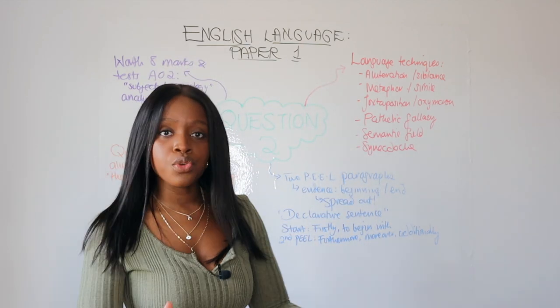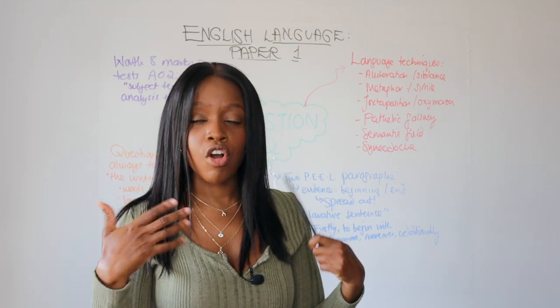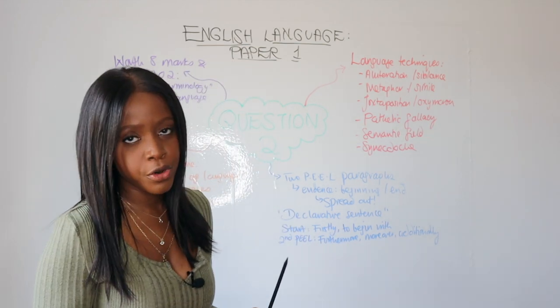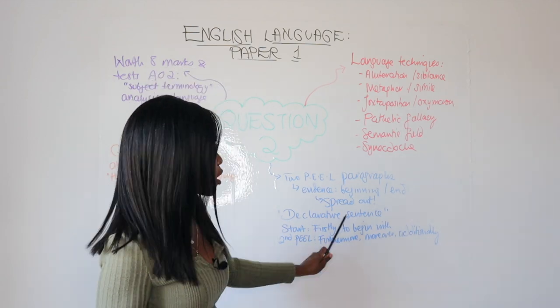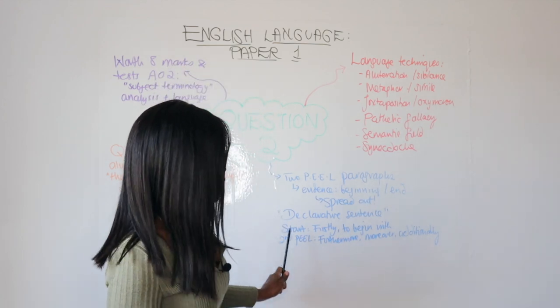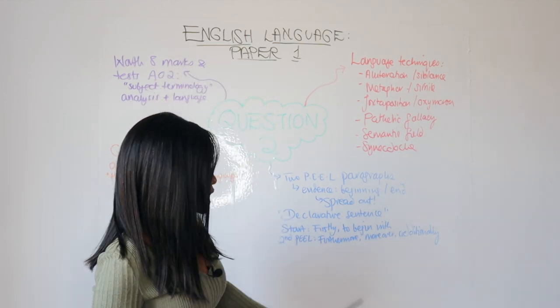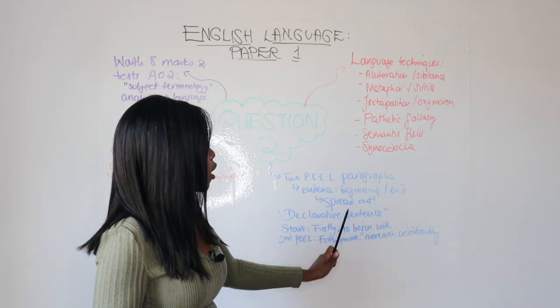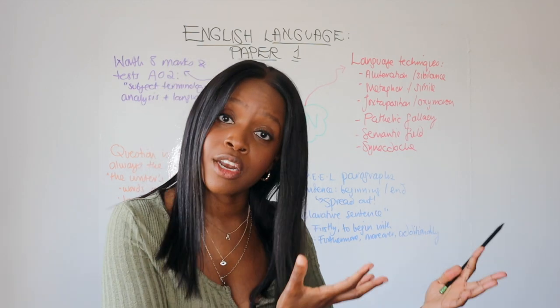And when it comes to approaching the third problematic bullet point that you're given, you're asked to talk about sentence forms, which is technically structure. The easiest way to approach this is in one of your paragraphs, just mention how the writer uses X language technique in this declarative sentence. A declarative sentence is a sentence that states a fact, feeling or mood. Final thing is when you're opening your paragraphs, open them well. Use words like firstly, to begin with. Then when you develop your second paragraph, use words like furthermore, moreover, additionally, at the beginning of the second paragraph.